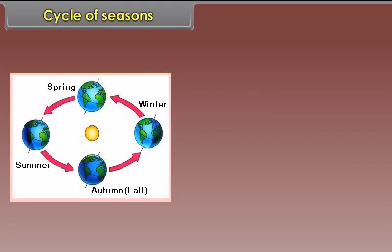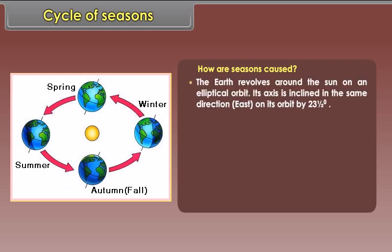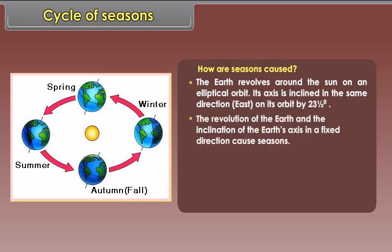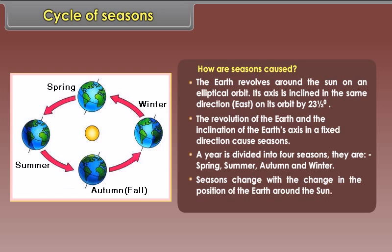Cycle of seasons. How are seasons caused? The earth revolves around the sun on an elliptical orbit. Its axis is inclined in the same direction on its orbit by 23 and a half degrees. The revolution of the earth and the inclination of the earth's axis in a fixed direction cause seasons. A year is divided into four seasons: spring, summer, autumn and winter. Seasons change with the change in the position of the earth around the sun.